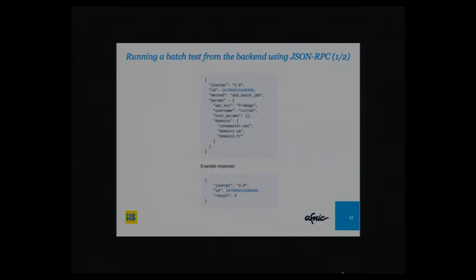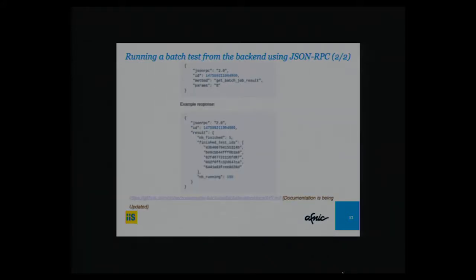For batch testing, you can run five, ten, or even a hundred thousand domains. You call the JSON-RPC, add a batch job using the method addBatchJob, provide an API user key, run the test, get a response with an ID, and use that ID to get the number of results. For example, there are about 200 tests total, with five finished and 195 still running. There is API documentation in GitHub which is currently being updated, as some feedback indicated it was not properly documented.